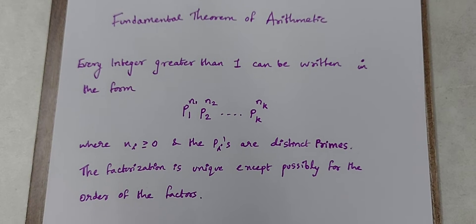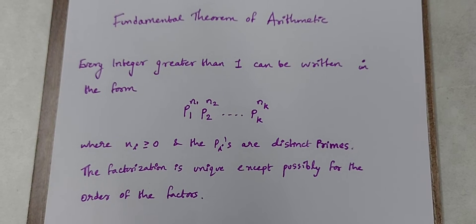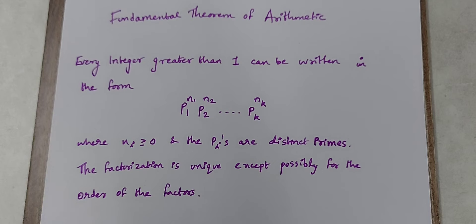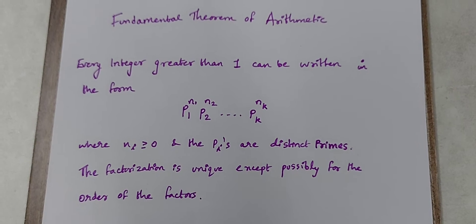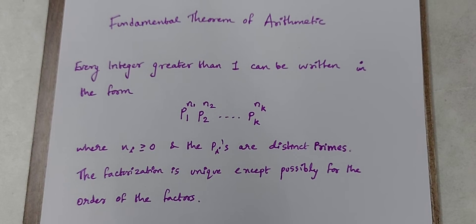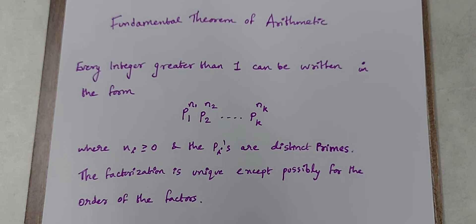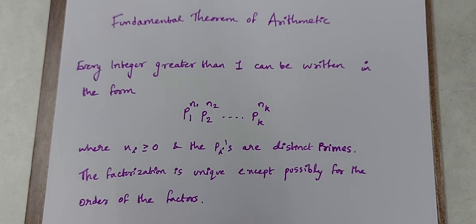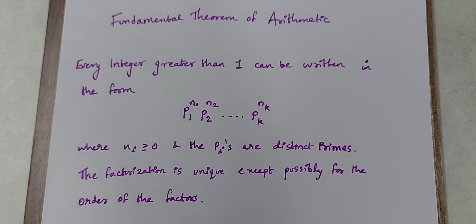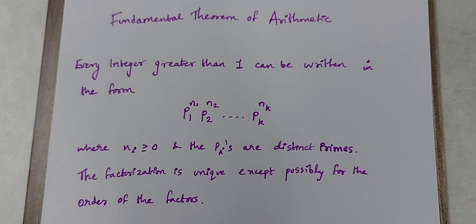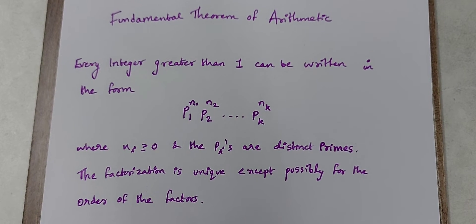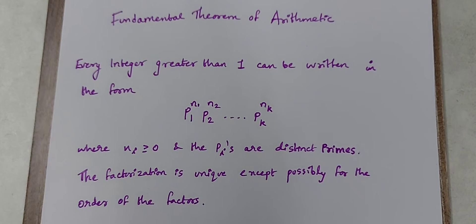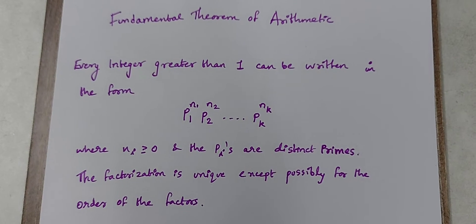Formally, we can state it as follows: every integer greater than 1 can be written in the form p1 raised to n1, p2 raised to n2, and so on, pk raised to nk, where the ni's are at least 0 and the pi's are distinct primes. The factorization is unique except possibly for the order of the factors.